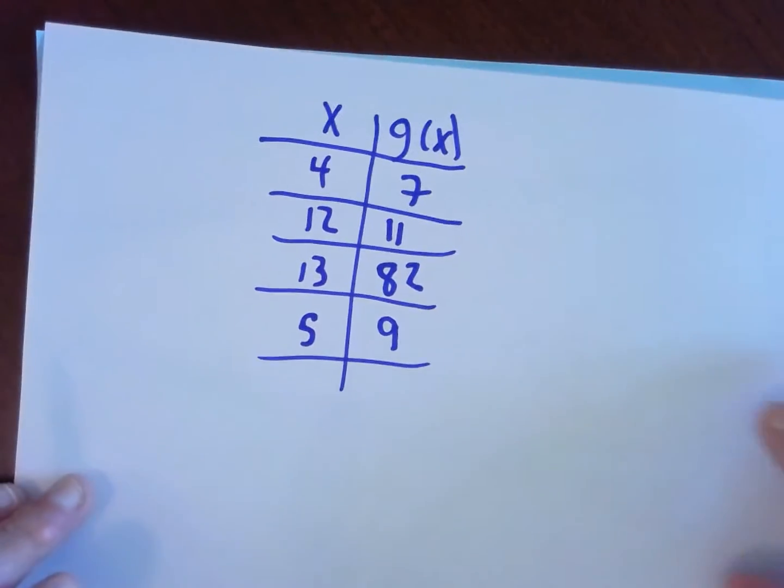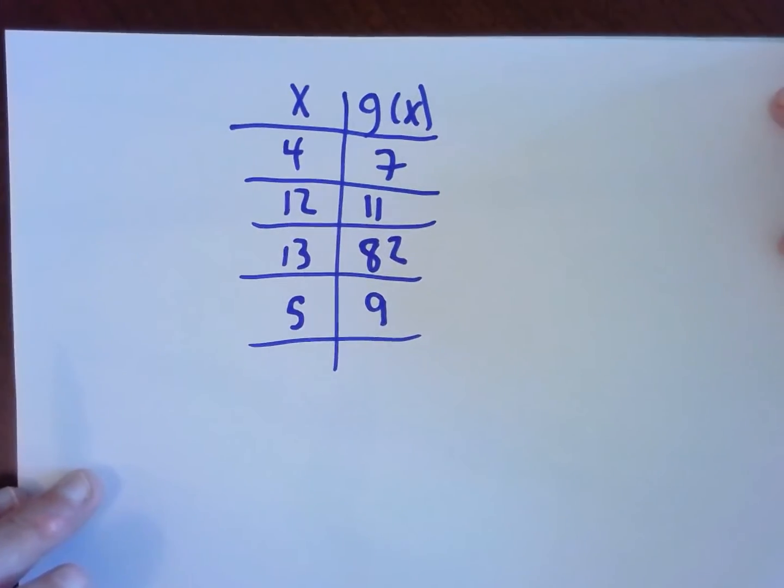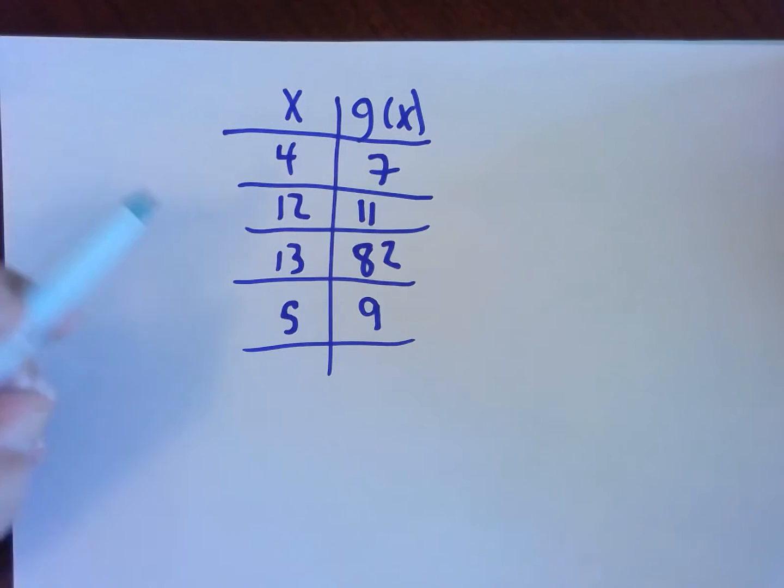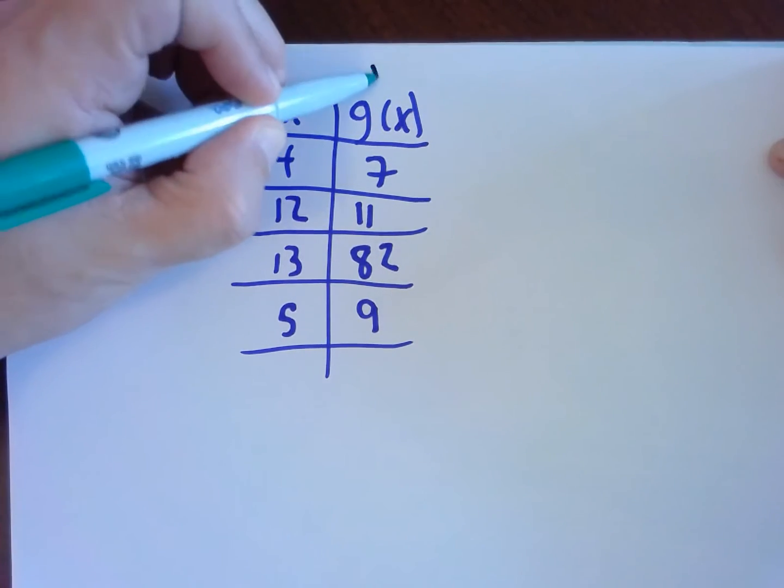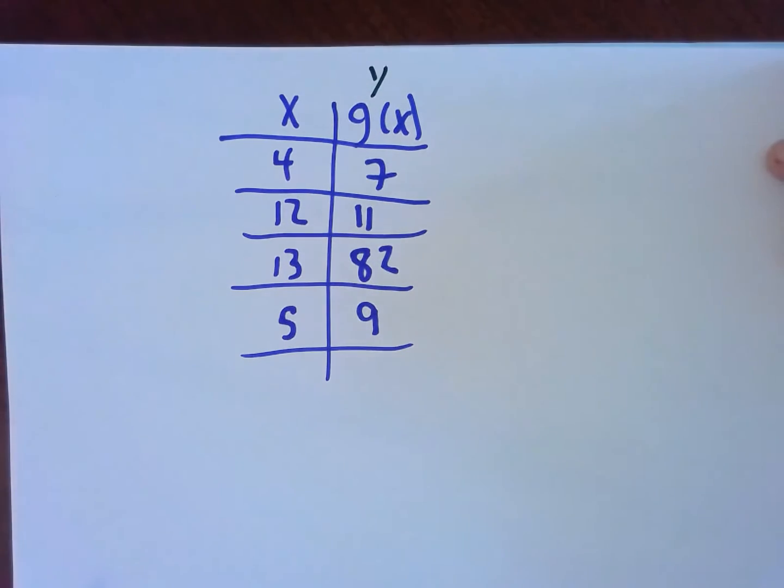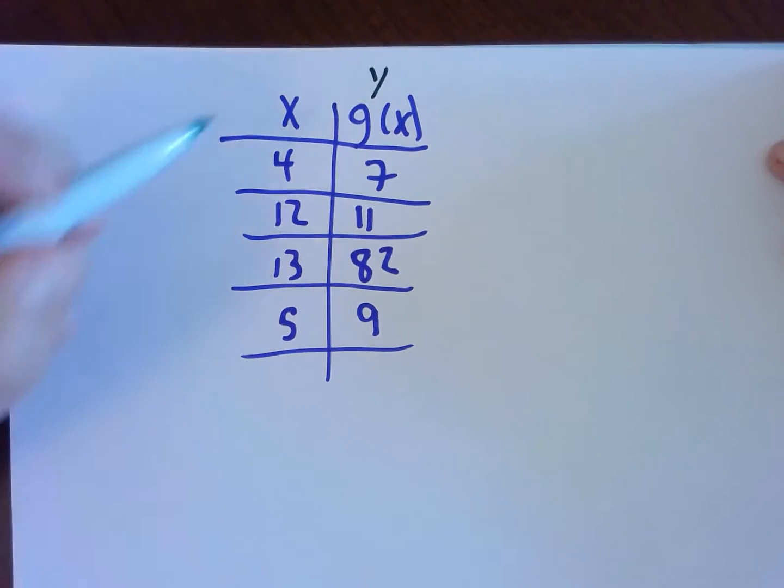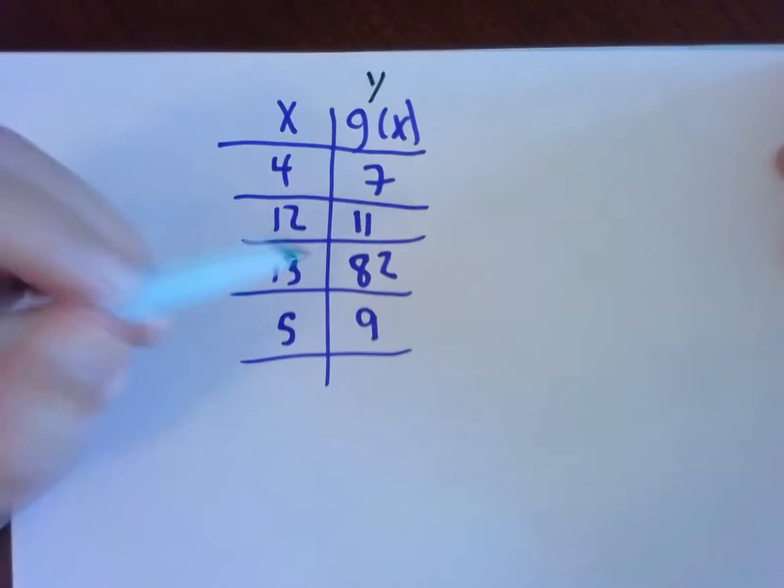Okay, let's look at another example. Here I have some function given by an x, y table. Remember, this fancy function notation is just a fancy way of saying y. The outputs are y's. So I have an x, y table. That's all this is.